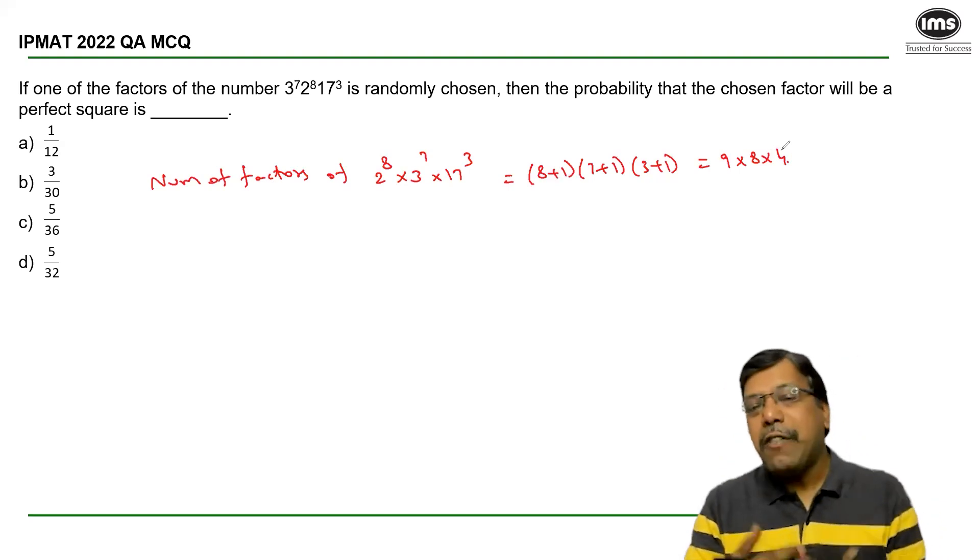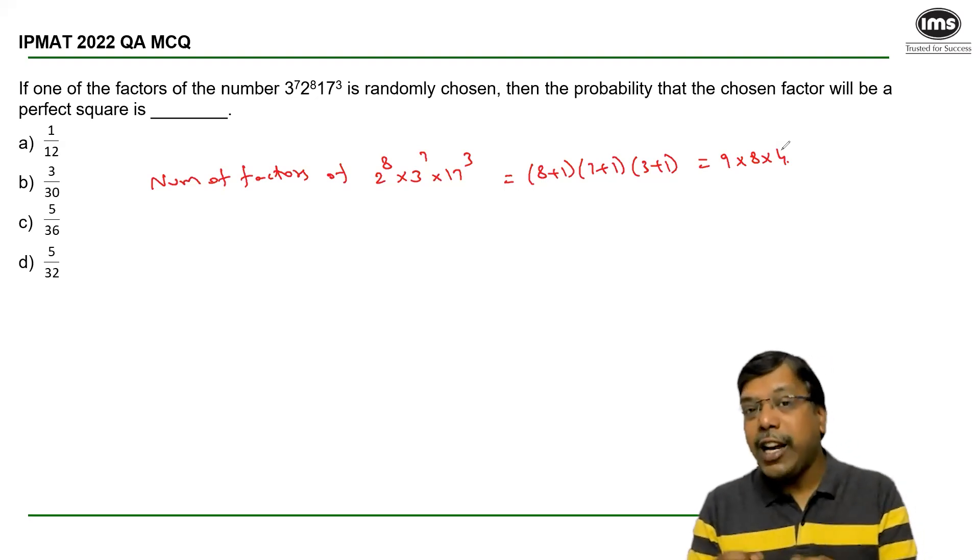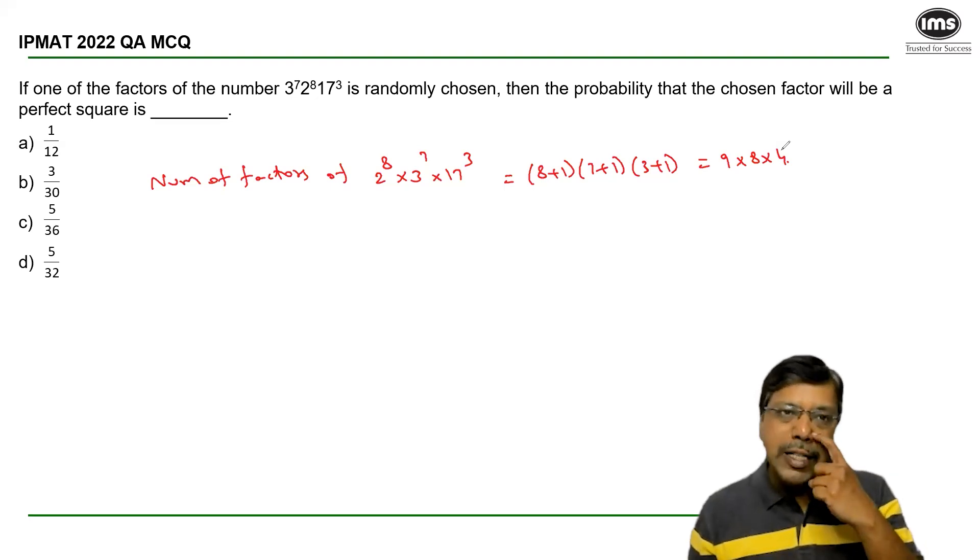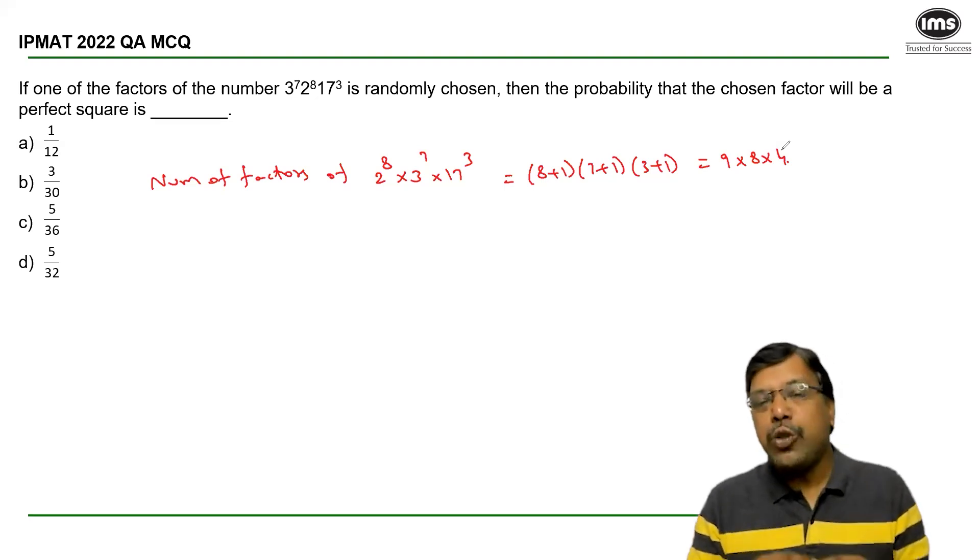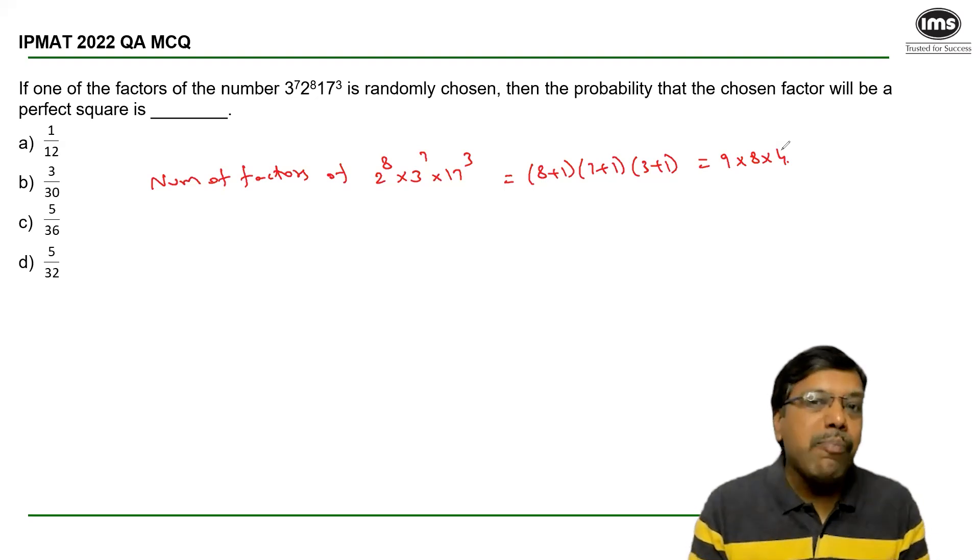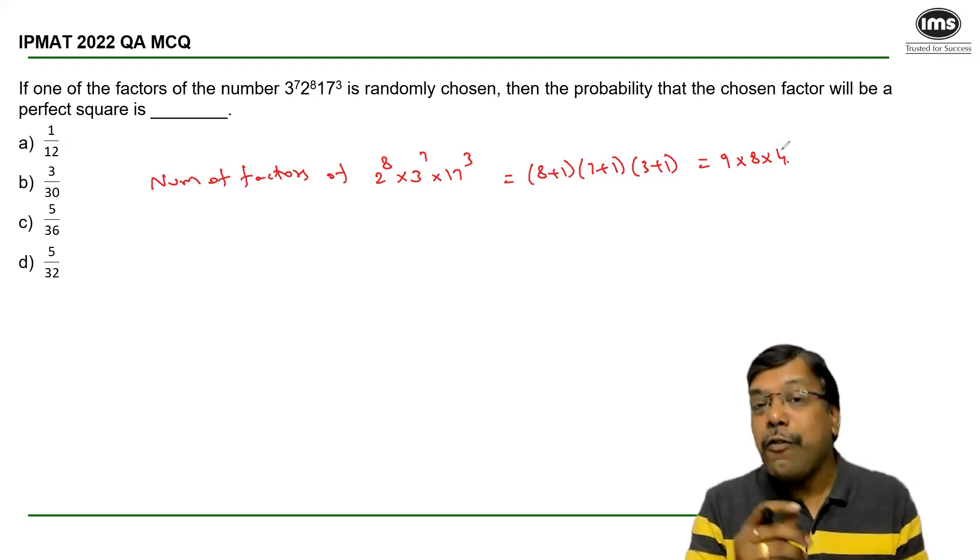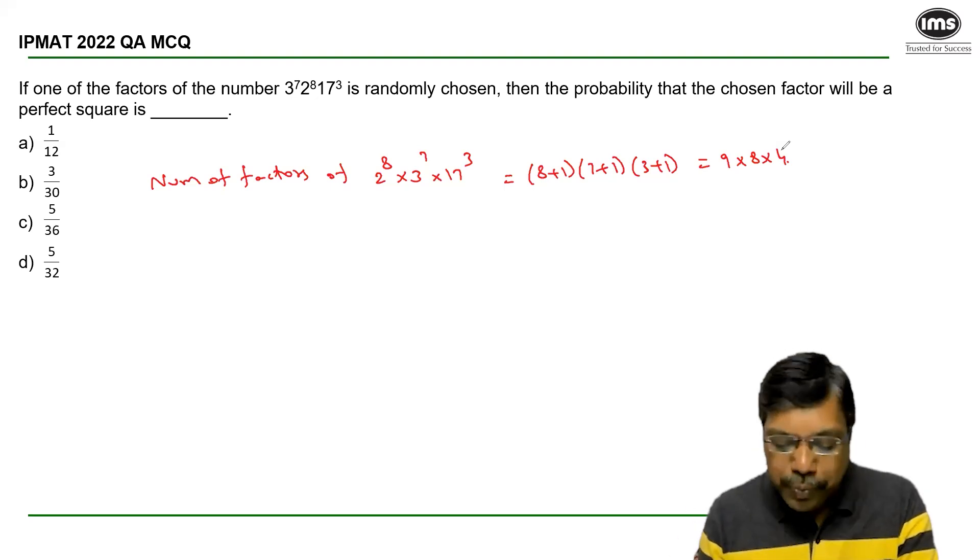Now, the favorable cases are the ones where the factor I choose is a perfect square. What is the rule or property that needs to be satisfied by a number to be a perfect square? The power of every prime factor should be divisible by 2.